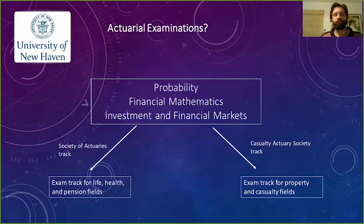There are actually two different tracks, and the track that one takes depends on the specific field they end up working in. But regardless of which track, they all start with the same three exams. The first exam is in probability, the second in financial mathematics, and the third in investment and financial markets.